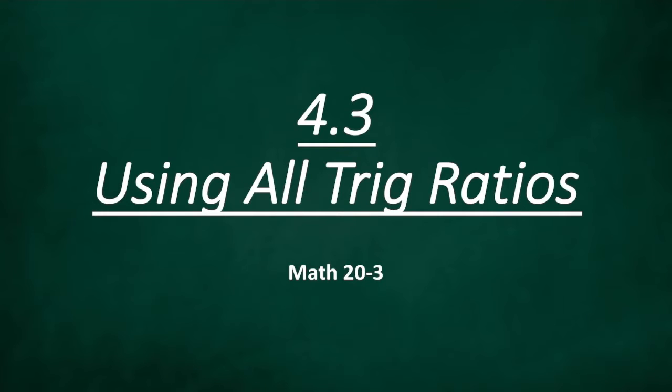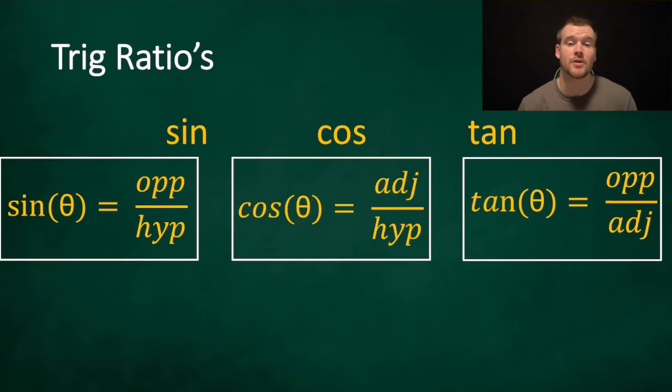Okay, welcome back to Math 20-3. This is lesson 4.3 and we're going to be looking at how to use all the trig ratios. So from the first lesson in this chapter we looked at sine, cos, and tan. We just focused on using tan in the last two lessons and now we're going to look at how to use cos and sine. The good part about this is it's going to be the exact same way to use these, it now just has different ratios.